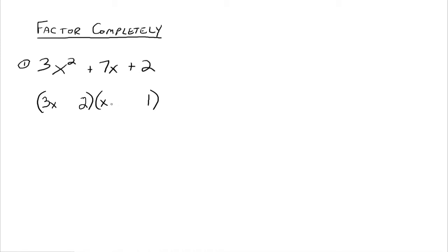Since the last sign is a plus, these signs are the same, and they match the sign of the middle term — in this case, plus. Now here's where we do some quick math in our head. To figure out if this is the right combination: 3x times 1 gives us 3x, and 2 times x gives you 2x. When you add those together, you don't get 7x, so this is not the right combination.